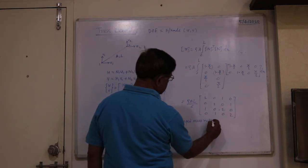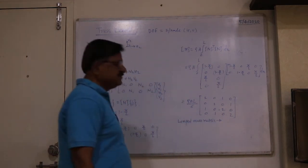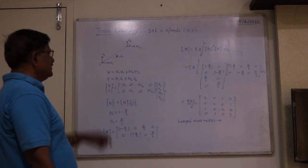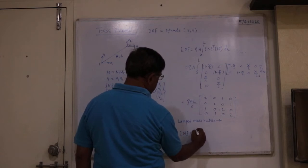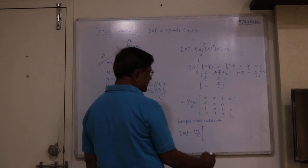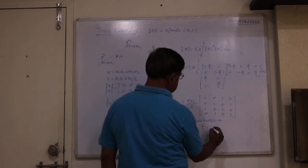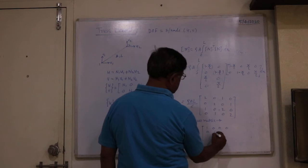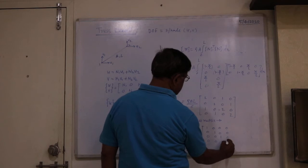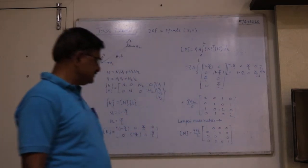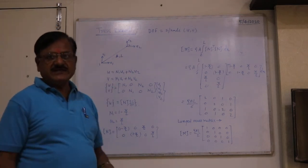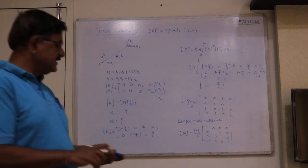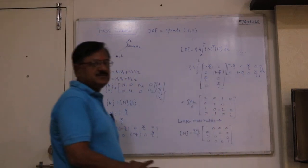The lumped mass matrix for the truss element is found by lumping the total mass equally among the two nodes. It is M = ρAL/2 times the 4×4 identity matrix, a diagonal matrix. So we can find the consistent and lumped mass matrix for various elements using this procedure.